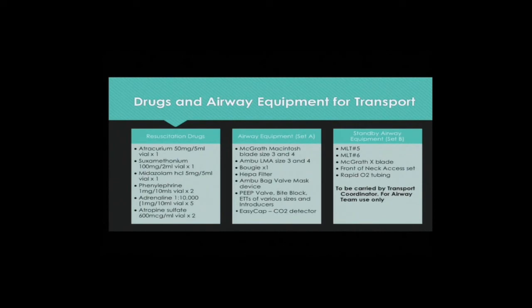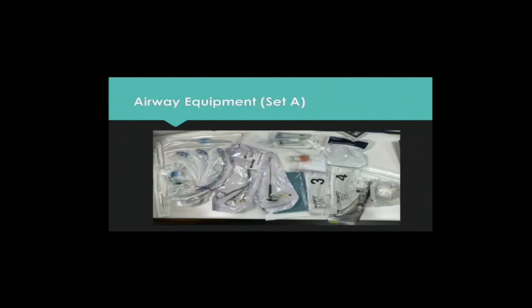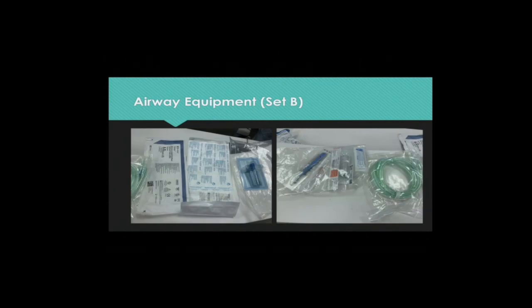These are the drugs and airway equipment to bring along. For airway set A, this will be carried by the team transporting the patient. For airway set B, that is to be used by the airway team only, it will be carried by the transport coordinator in a separate lift. The following slides show the equipment in airway set A. This slide shows the equipment in airway set B. The picture on the left denotes the micro laryngeal tube. The picture on the right shows the front of neck access equipment, as well as the rapid oxygen tubing.